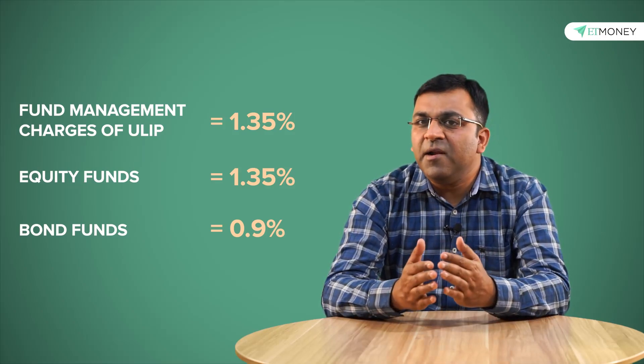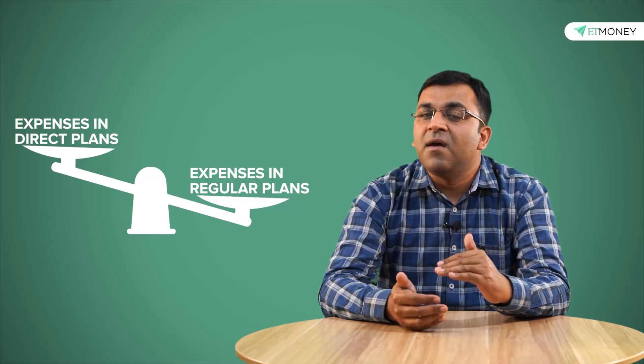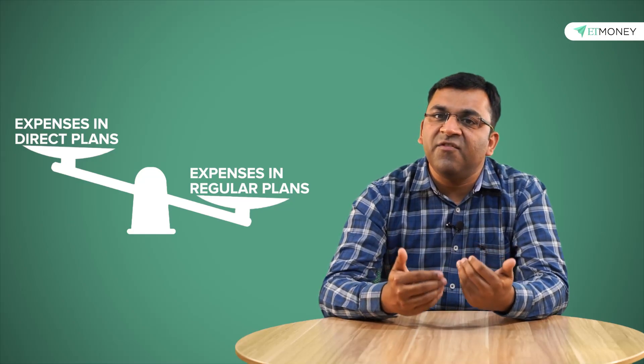In the case of mutual funds, expense ratios are a bit more spread out with different asset management companies charging a different percentage. But what's generally true is that the direct plans of most mutual fund schemes are generally lower than the 1.35% mark while the regular plans are higher than the 1.35%. In other words, preferring to invest via the direct plan route will keep your expenses low as compared to a regular plan.